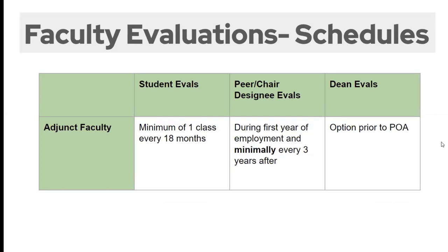I encourage you to talk to other faculty about creative ways to get people to participate. Some people do extra credit; some people have students do it while they're sitting in the classroom — there are lots of different ways to get good feedback. You'll also be scheduled for a peer or chair designee evaluation minimally every three years, and that's the cycle we generally follow.